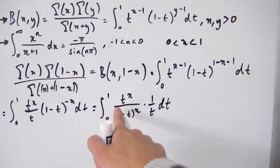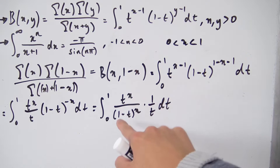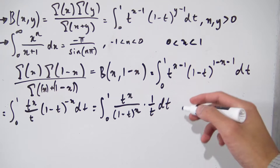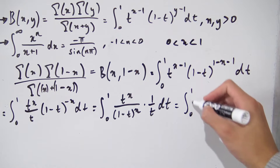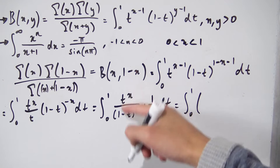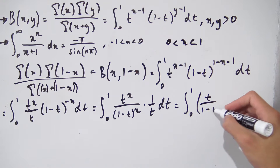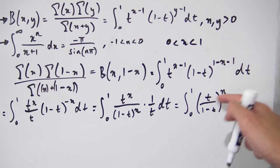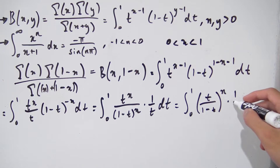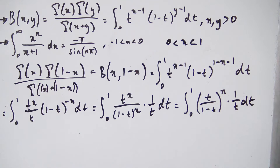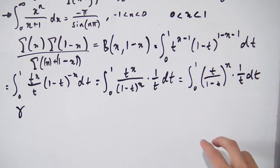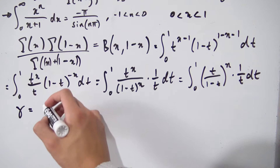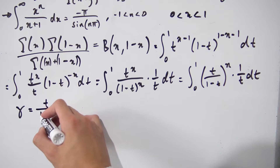Notice we have something raised to the power x and something else also raised to x. We can factor out the power by taking the quotient: t over (1-t), raised to the power x, times 1/t, dt. Now I want to do a substitution — let's call our new variable gamma, and set gamma equal to t over (1-t).